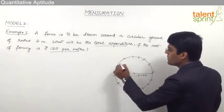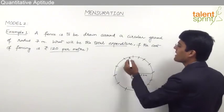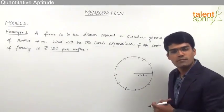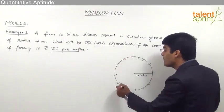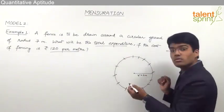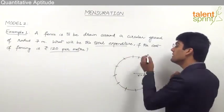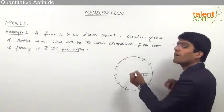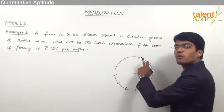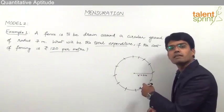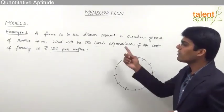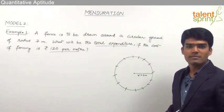When we put a fence around a circular ground or any two-dimensional shape, we are actually working on the perimeter. To find out the total cost, we first need to know the length of the boundary — because a fence is nothing but the boundary. Until we know the length of the boundary, we cannot calculate the total expenditure.